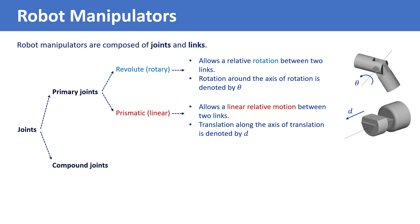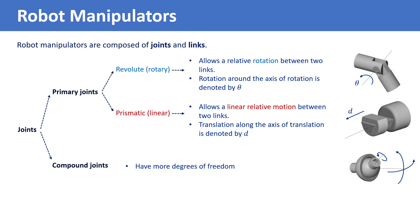Primary joints are the basic joints which can be added together to create more complicated joints known as compound joints, which have more degrees of freedom. An example of a compound joint is a spherical joint which has three degrees of freedom, so it can rotate around all three axes. For the analysis of robotic manipulators, we can replace a compound joint by several primary joints. For example, we can replace a spherical joint with three intersecting revolute joints.